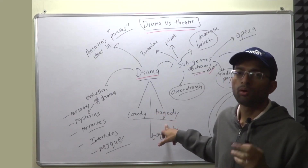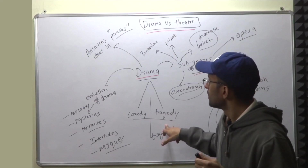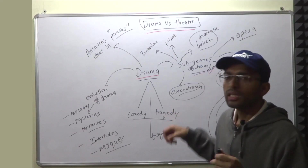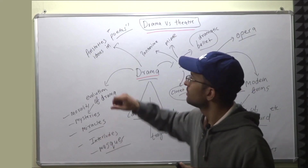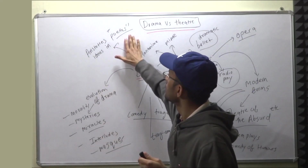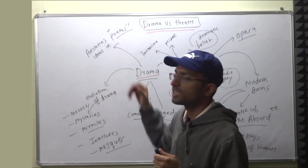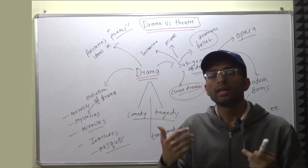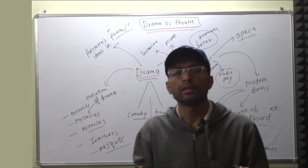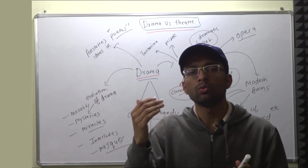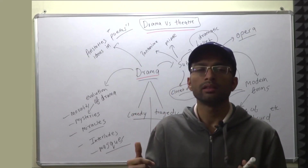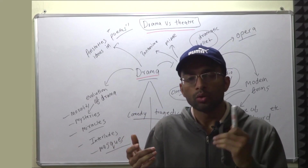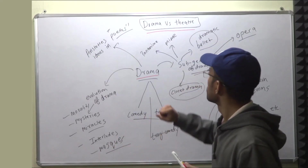When we read about Tragedy, the first thing that should come to mind is Aristotle's ideas, which he has expressed in the Poetics regarding Tragedy. He has given the definition of Tragedy and the various components of Tragedy. You should know all of that.